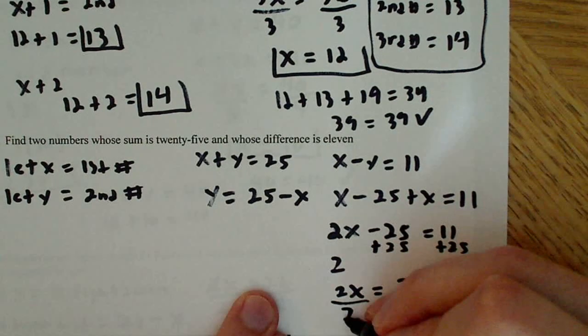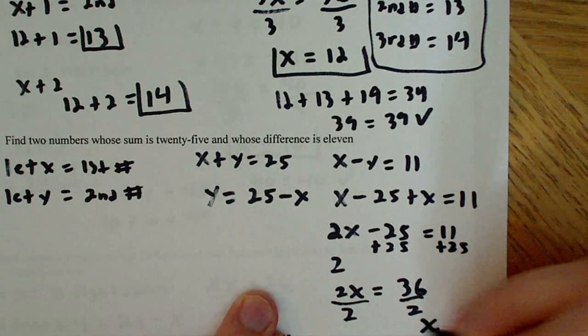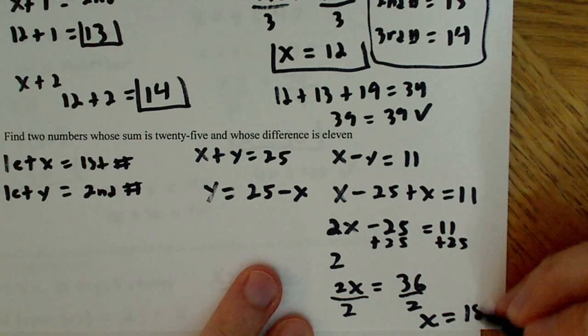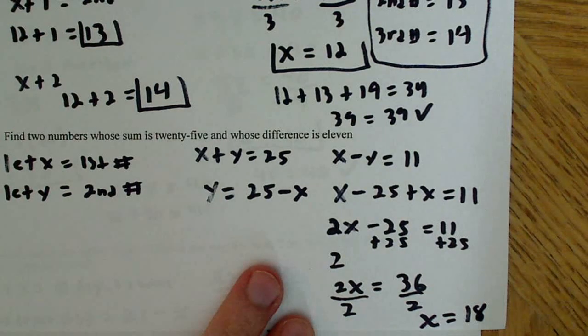And I'm going to divide this by 2 then to get x by itself. Okay? So 2. And that gives me an answer of 18. So x is equal to 18.